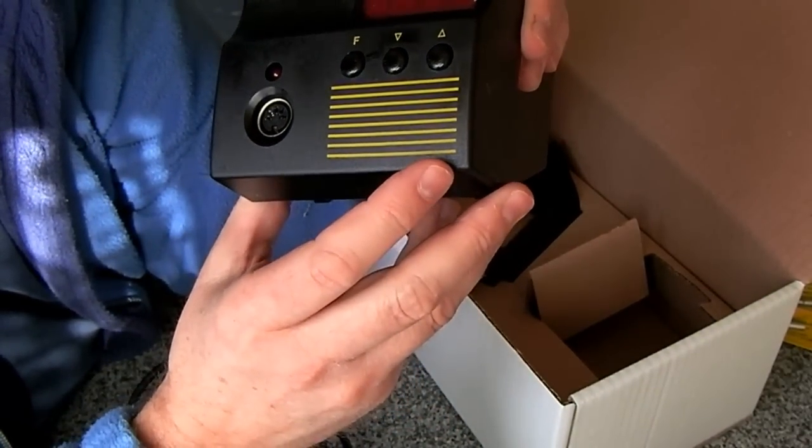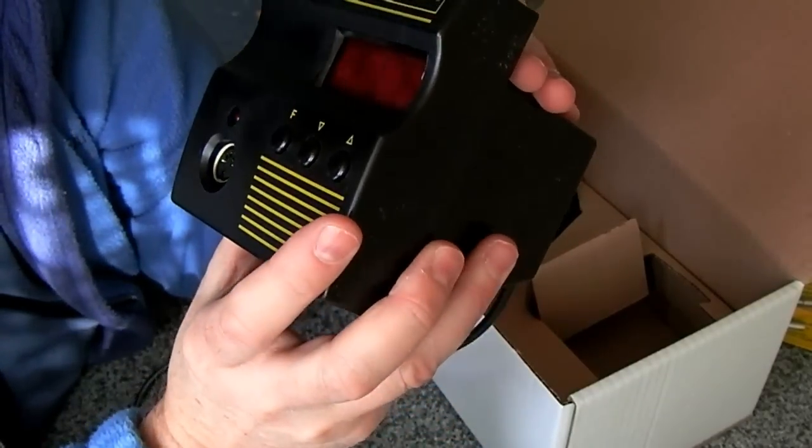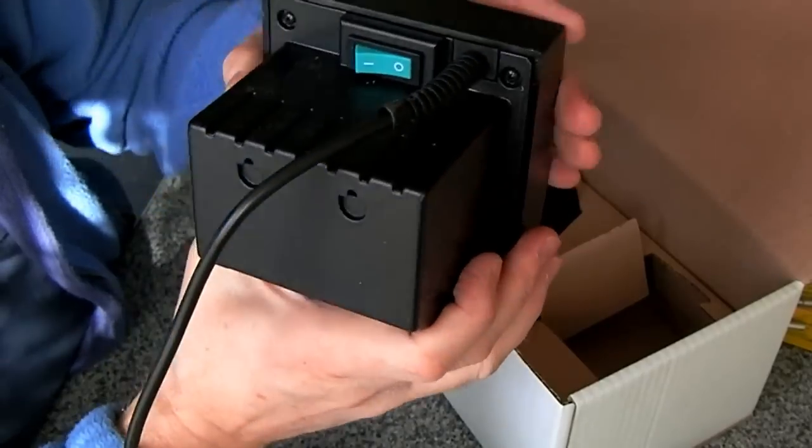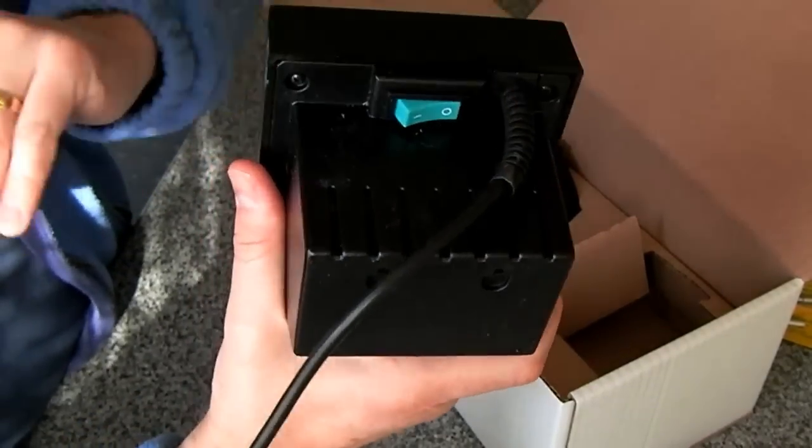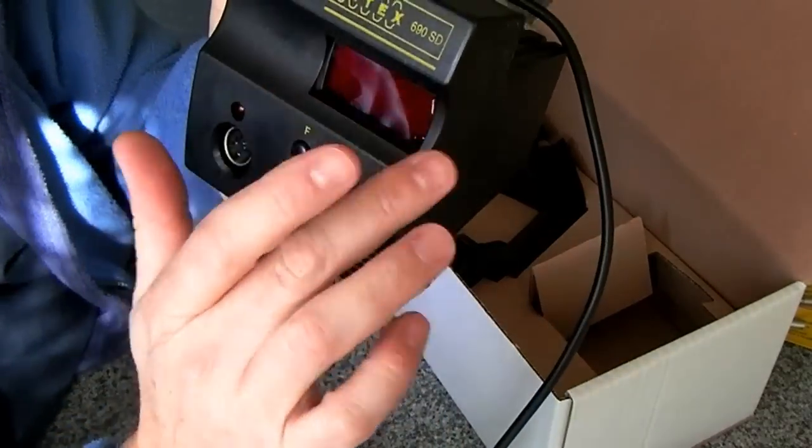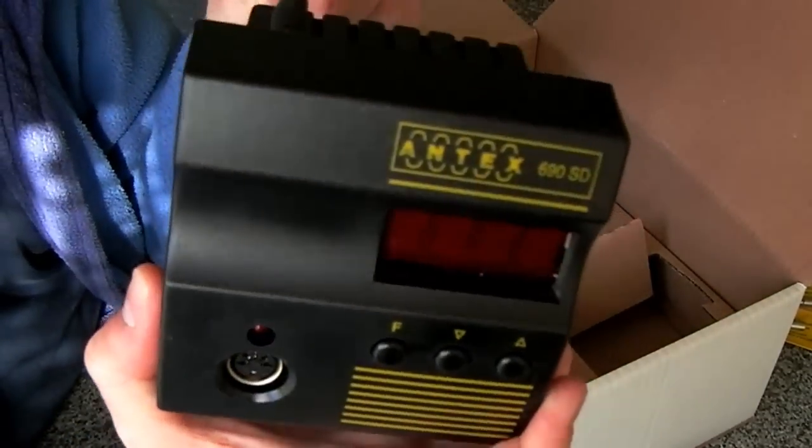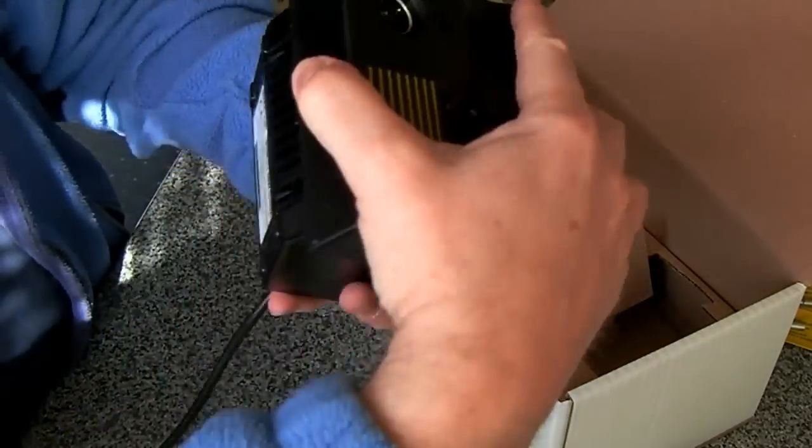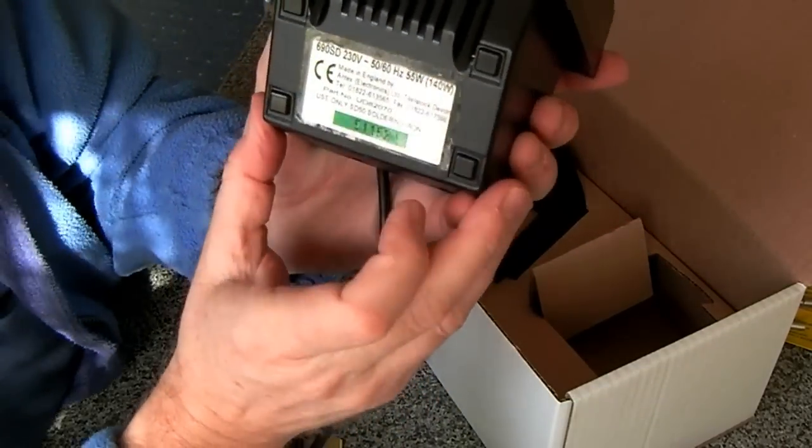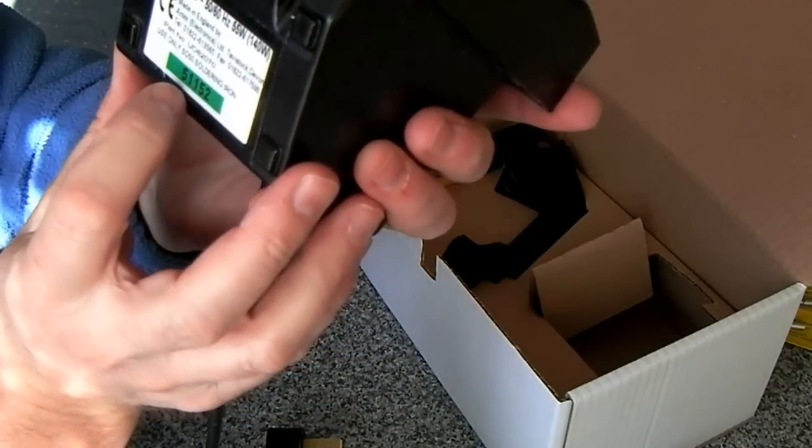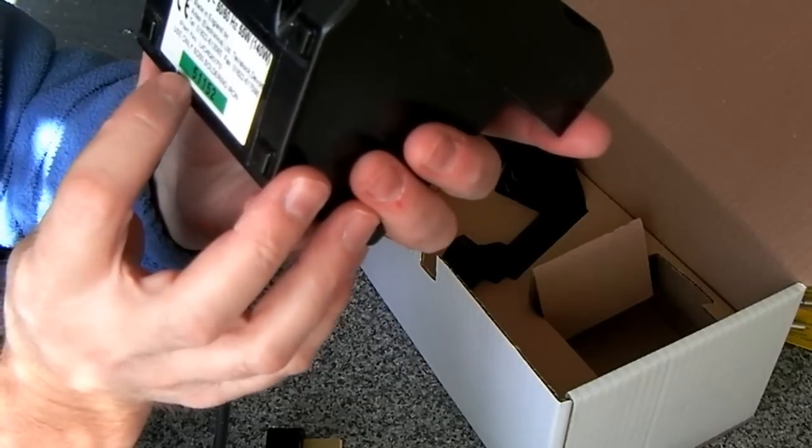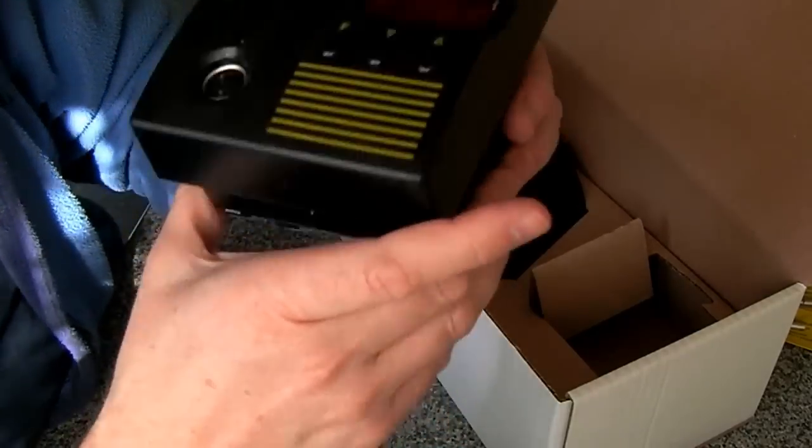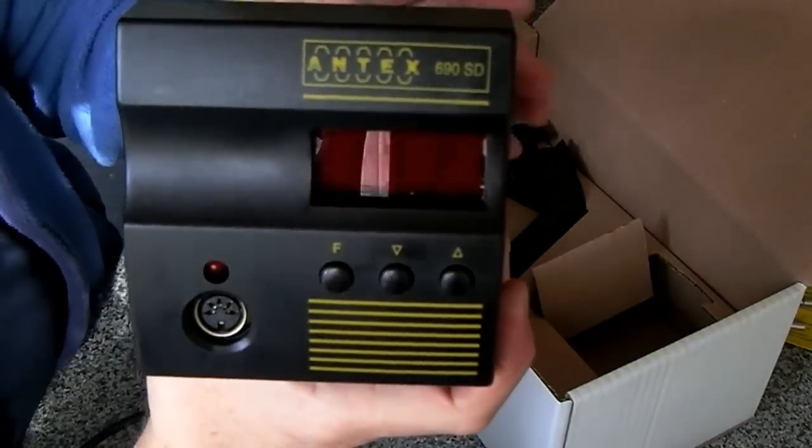Standard five pin DIN socket there. On the back you've got the same on-off switch. I have to say I do prefer the colour of this unit. I don't like the yellow ones as much as this. Made in England by Antex, we've got the model number also the part number and the serial number, rubber feet as on the other one. In fact I suspect it's probably exactly the same case just a different color.